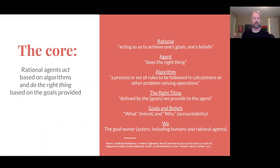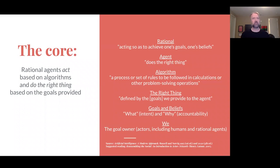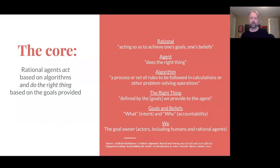There are other terms here that bear some description. An algorithm is a process or set of rules to be followed in calculations or other problem-solving operations — it could be an equation, or it could be a process or procedure, like instructions for making a peanut butter sandwich. The 'right thing' is defined by the goals we provide to the agent — they're only going to do what they've been asked to do based on goals coming from a goal owner. Goals describe what you're trying to achieve; beliefs describe why. That's where accountability comes into play: the goal is the what or intent, and the beliefs map to why.